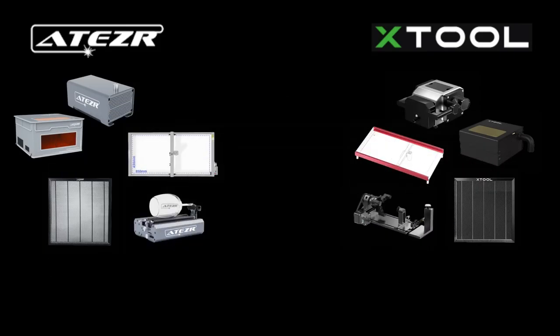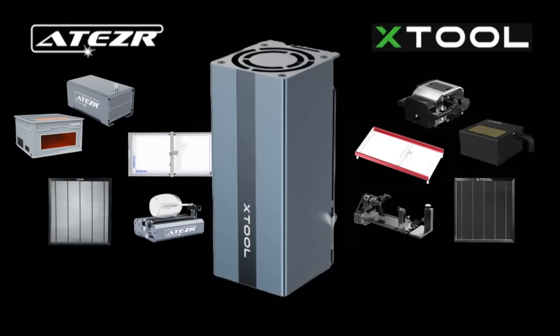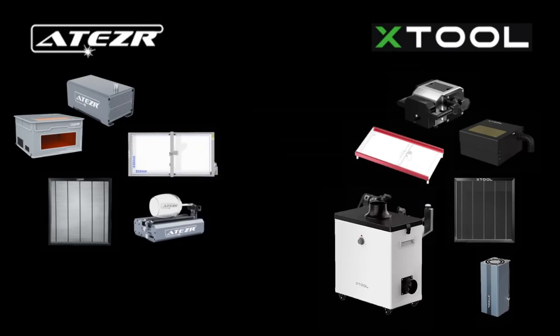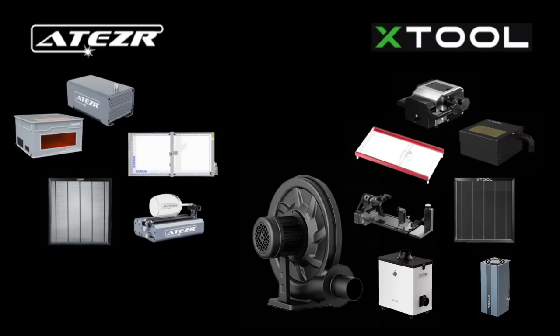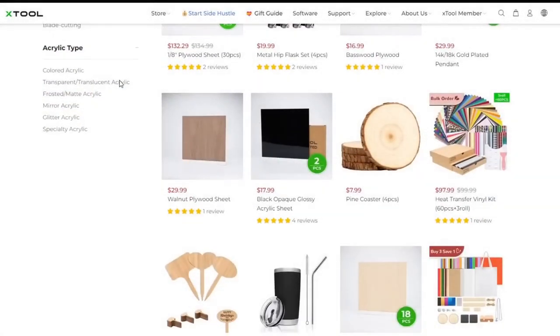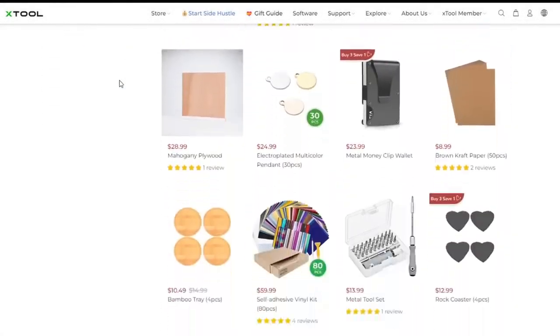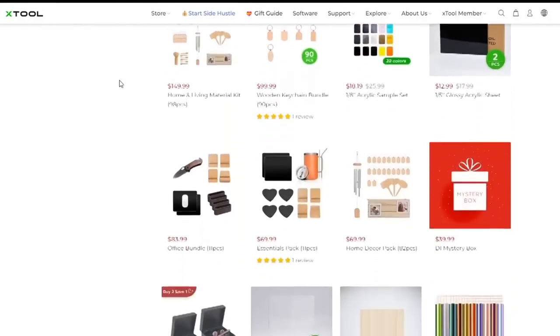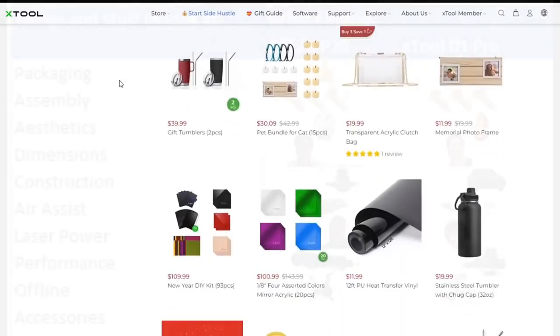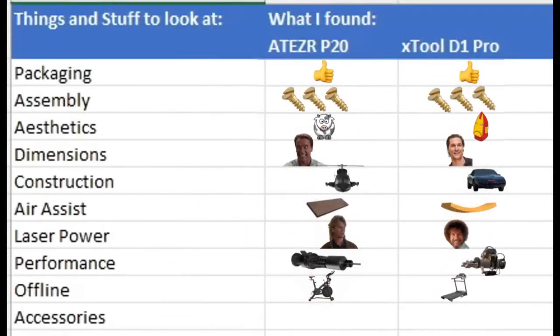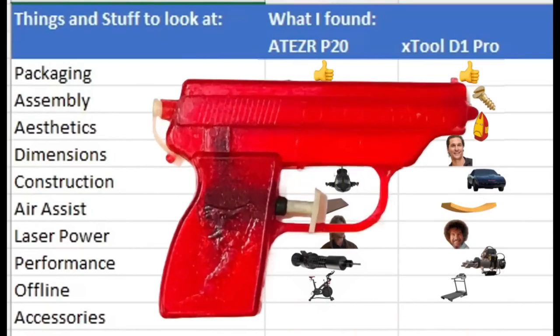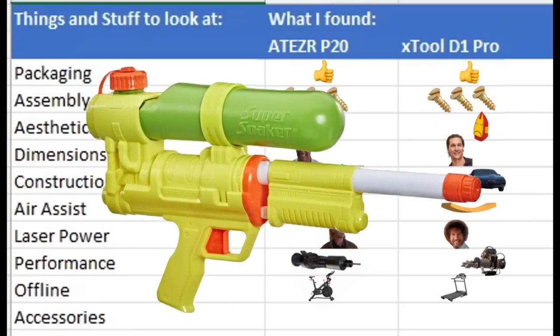But X-Tool has even more to offer, like upgradable laser modules, air purification systems, and even exhaust fans for fume extraction. Furthermore, they have literally hundreds of material options that you can purchase from their website. So when it comes to accessories, the X-Tool is the clear winner. If the Ateser laser was your typical squirt gun, then the X-Tool is the Super Soaker 50.